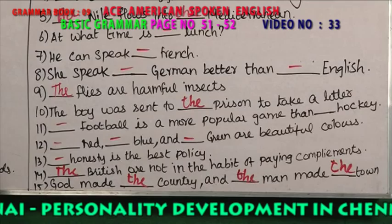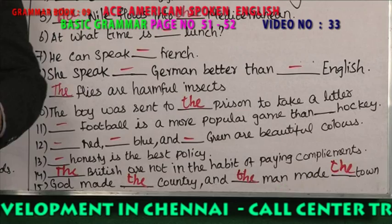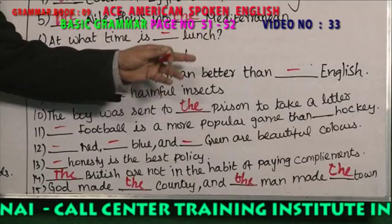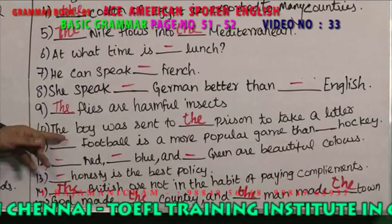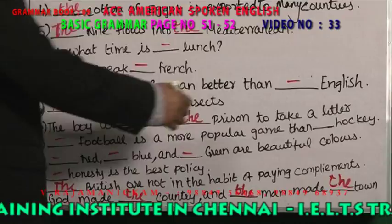The flies are harmful insects — you are talking about flies in general, this is a common noun. The boy was sent to the prison to take a letter to a particular prison, so you say 'the.' In front of games, you are not supposed to use 'a' or 'the.' Football is a more popular game than hockey — not 'the' or 'a.' In front of colors, you are not using 'a' or 'the.'